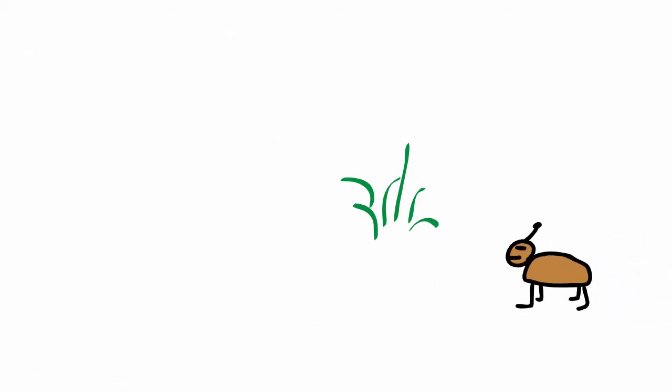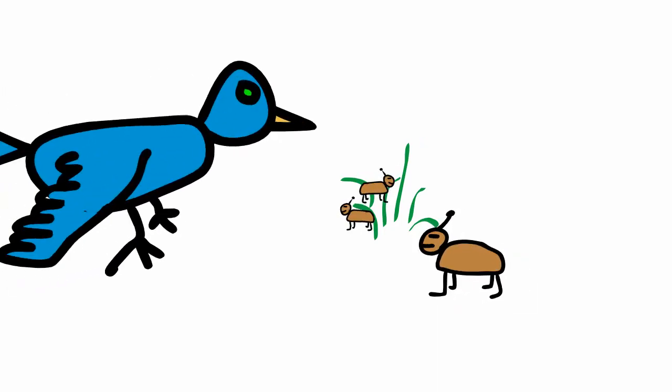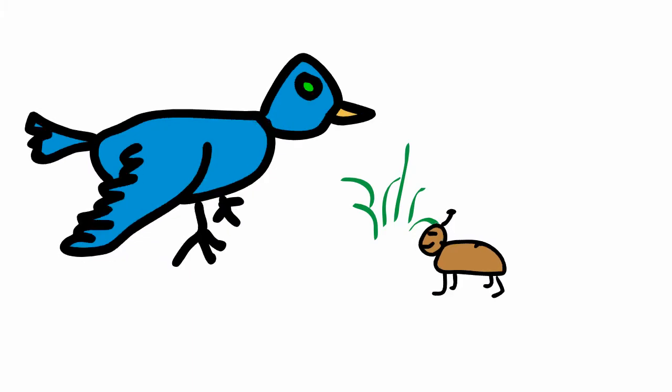Once upon a time, there was a four-legged brown bug and a two-legged blue bird. The bird ate bugs because they tasted good.